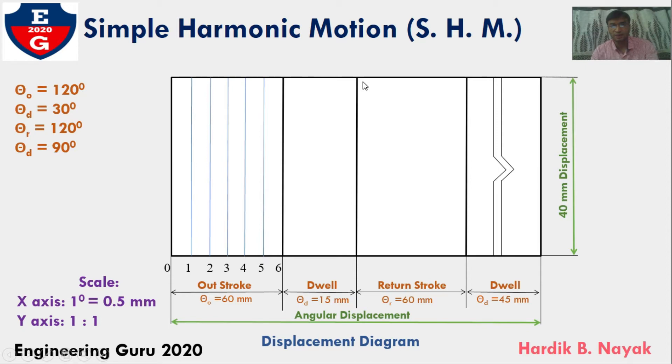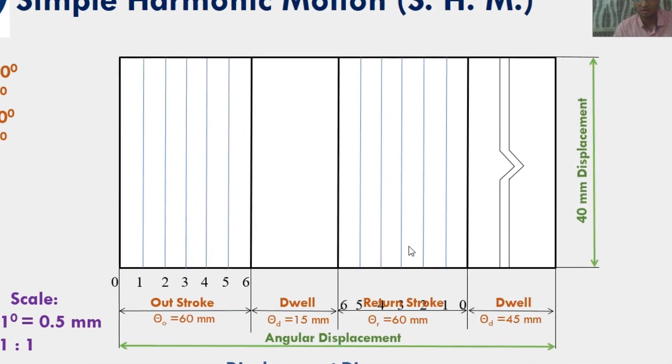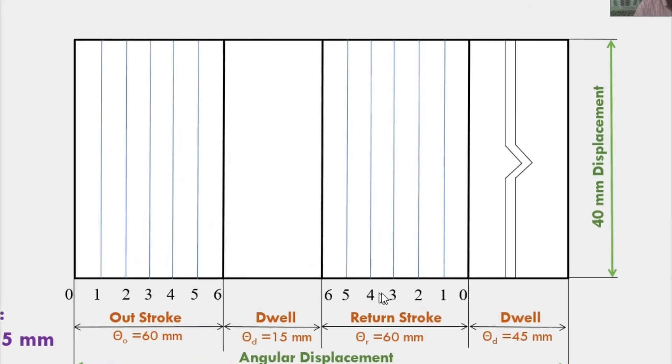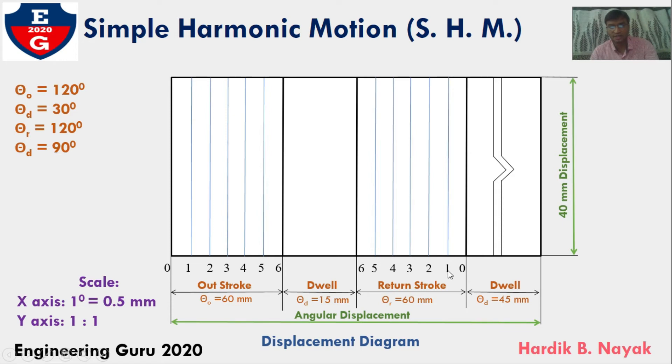After dwell, there would be return stroke that is 120 degrees. Again, divide this return stroke in 6 equal parts and draw projected vertical lines through all points. For simplicity, I will be keeping the same notation: 6, 5, 4, 3, 2, 1, 0. During the return stroke, follower would be reached to original position.